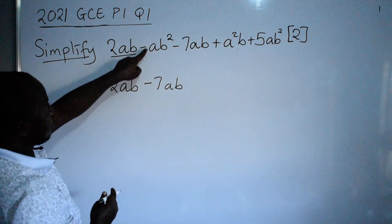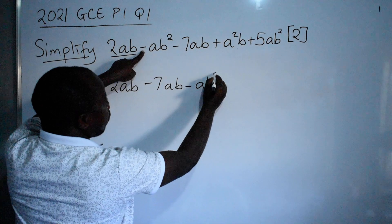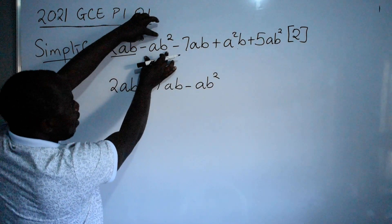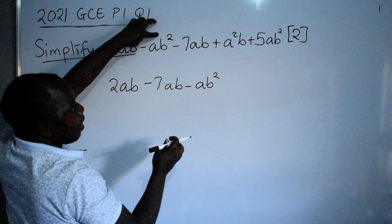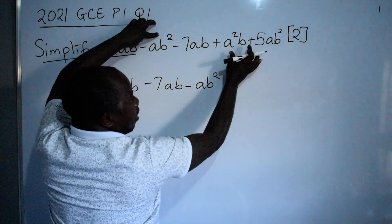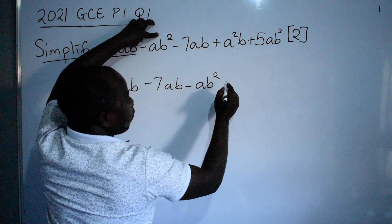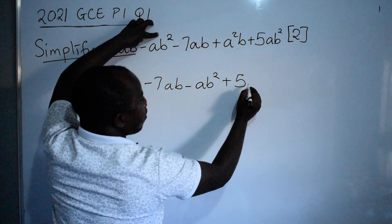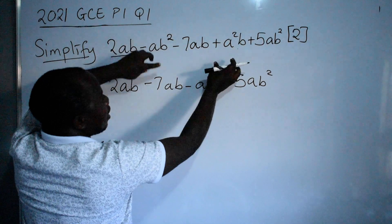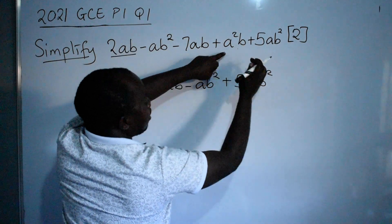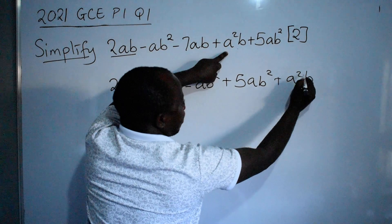You go to minus ab squared. You look for the pair for this ab squared. The pair is here — plus 5ab squared. Then this one at the end, which is plus a squared b.